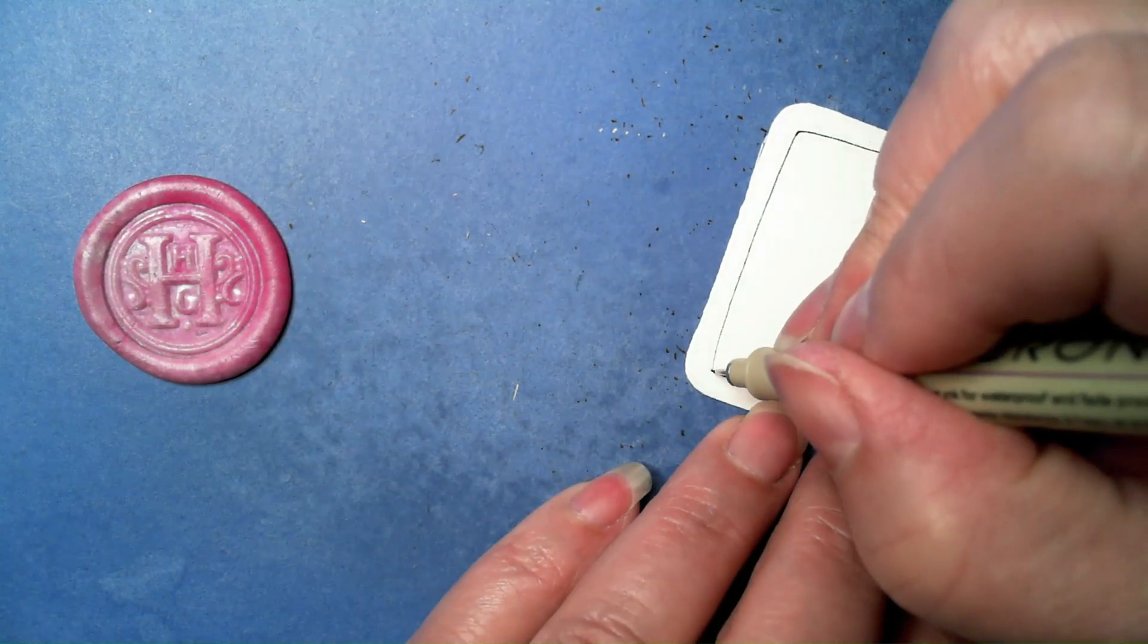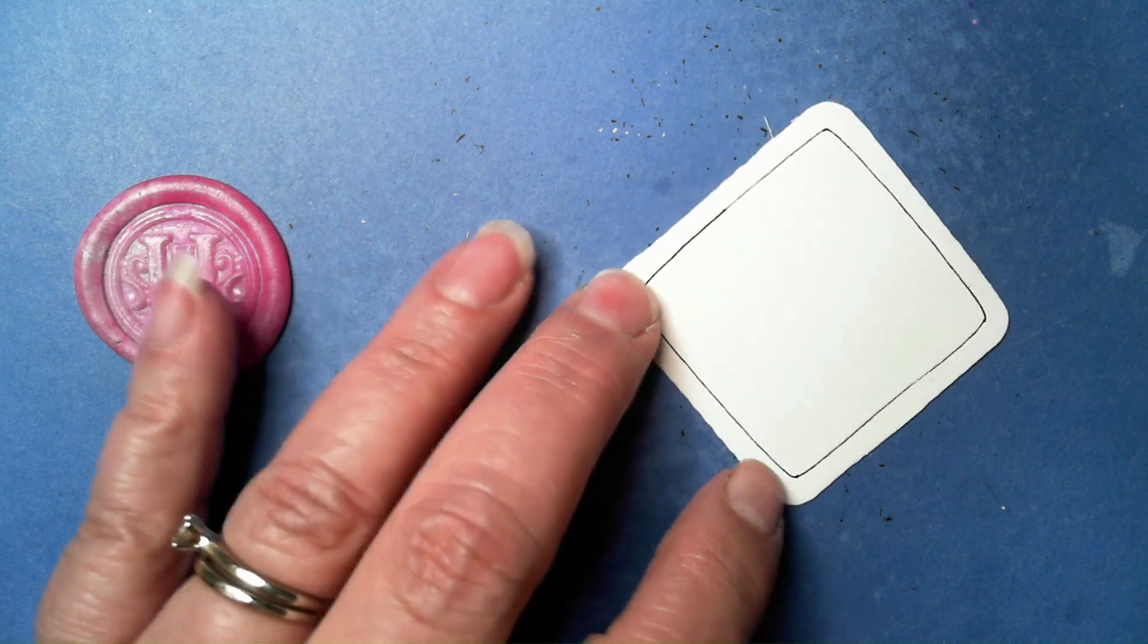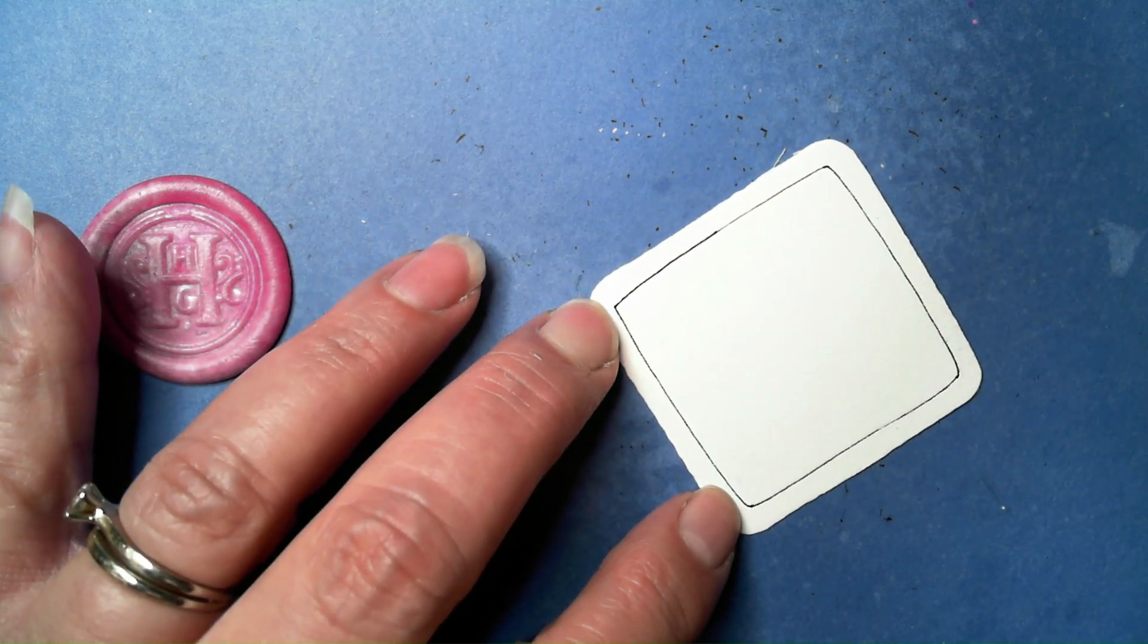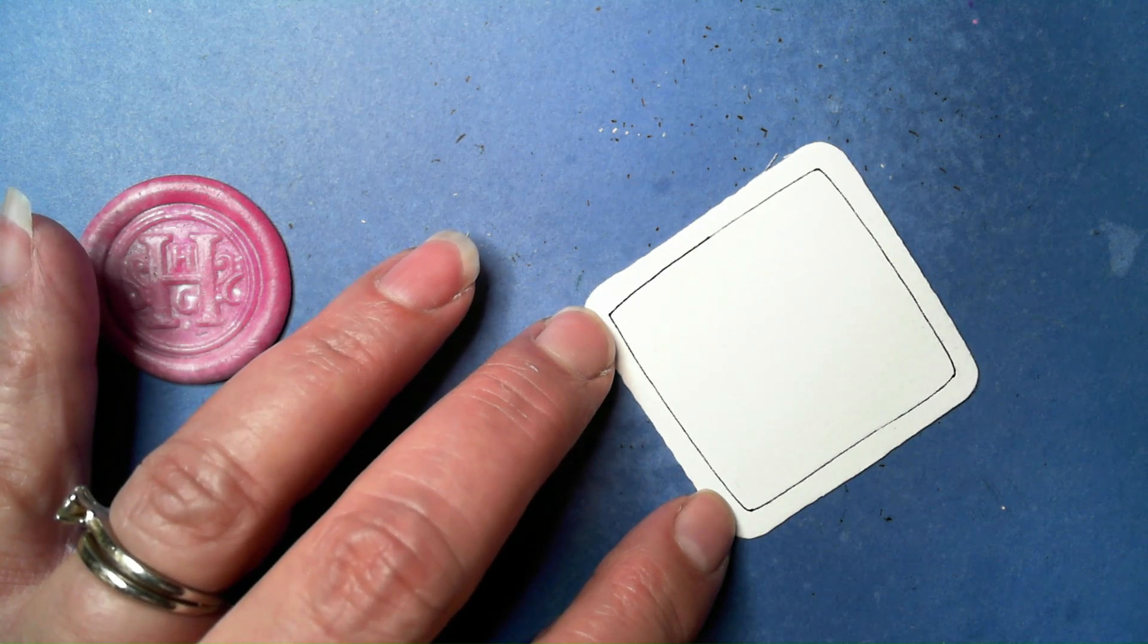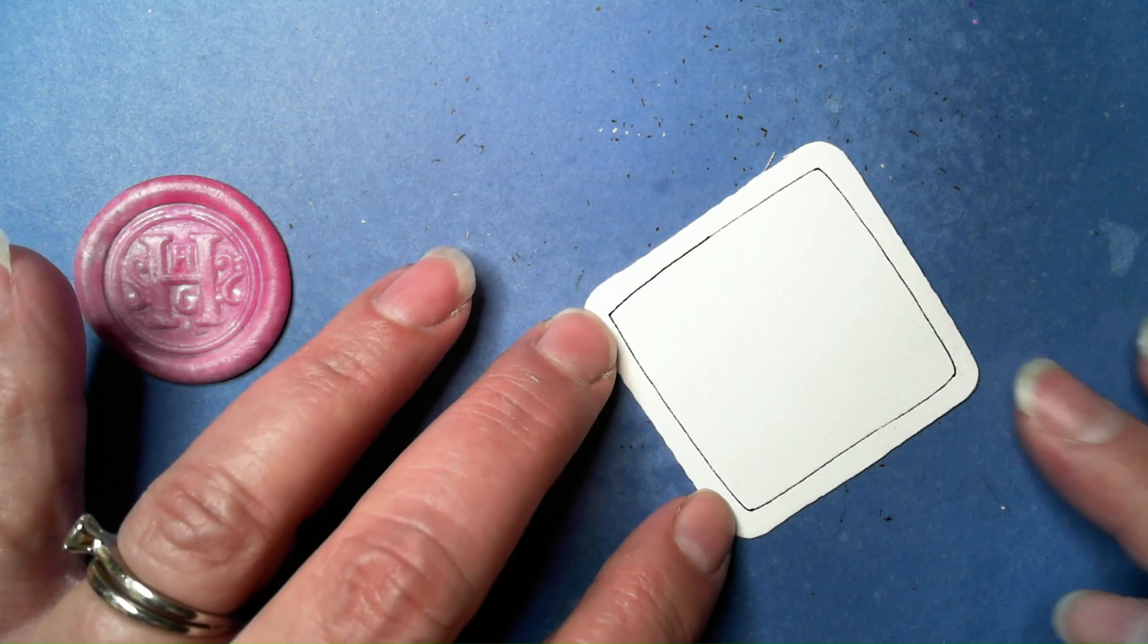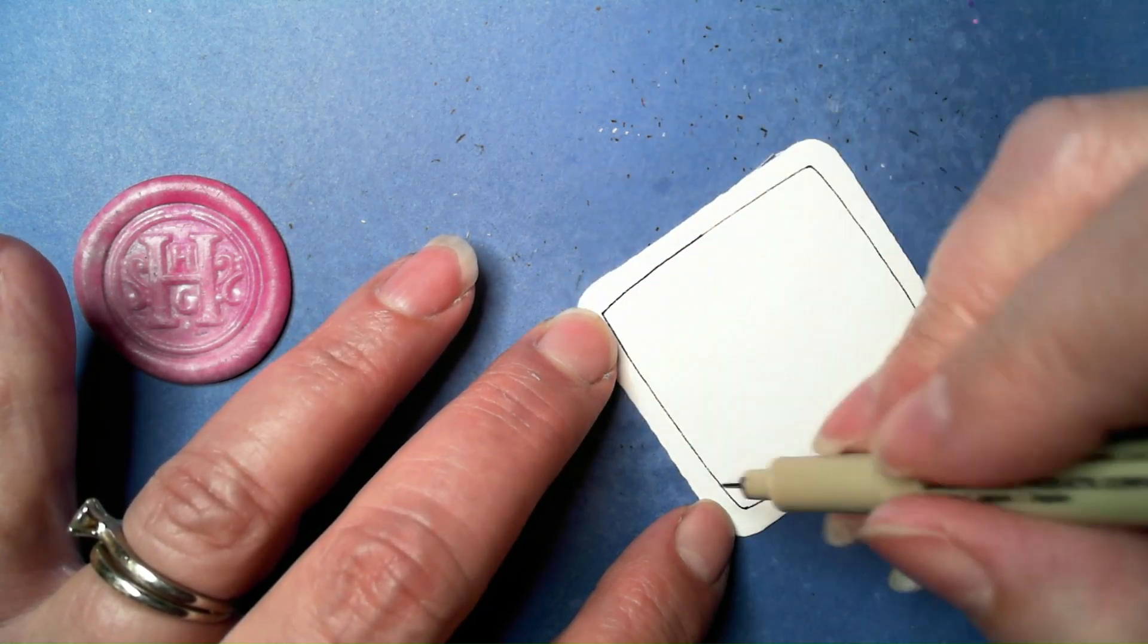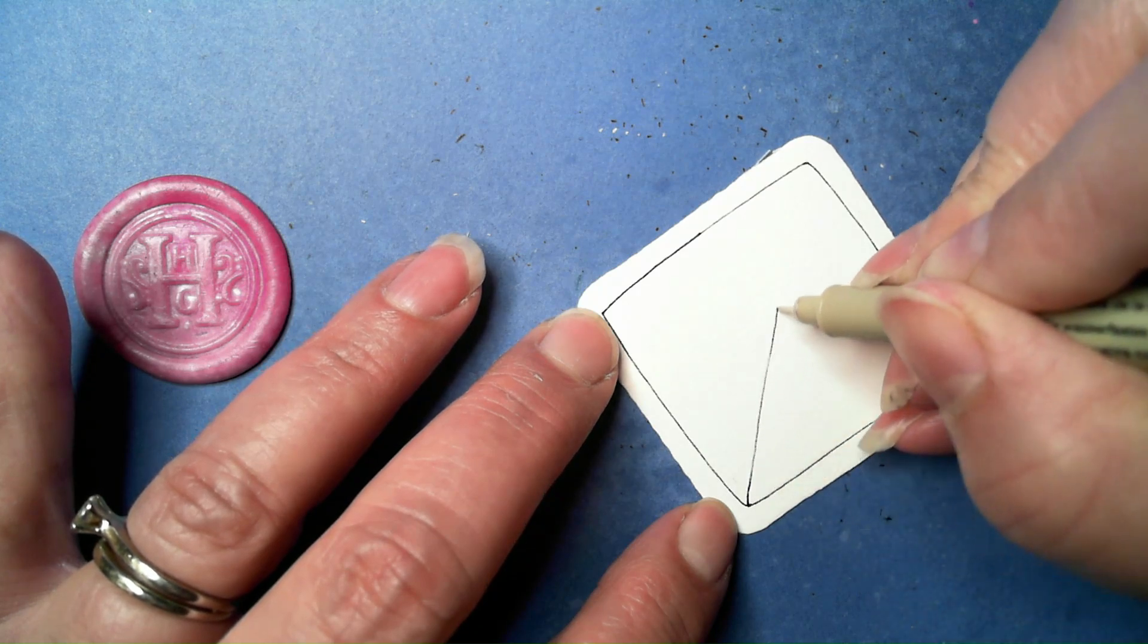All right, so I'm just doing the outer box here. It doesn't even have to be in a box - if you have a section you're filling in, I'm going to say you could probably make this work. In the box or whatever section, we're going to do diagonal lines.